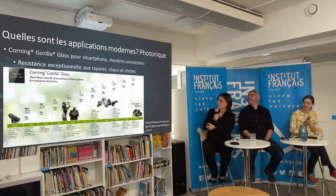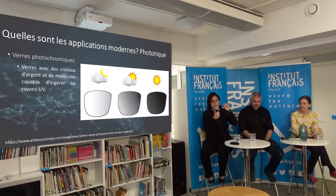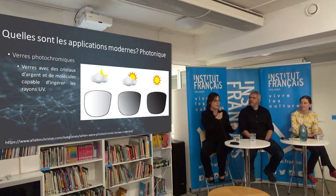Another application is photochromic glasses. Some of you may have them — glasses that become dark when there is sun, so you don't need a separate pair of sunglasses. They contain very small crystals where silver moves in sunlight and becomes metallic, making the glass dark. When there's a cloud, it becomes transparent again. Research continues to make them bleach faster.